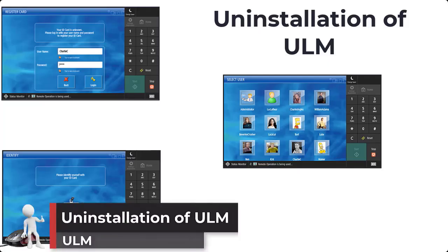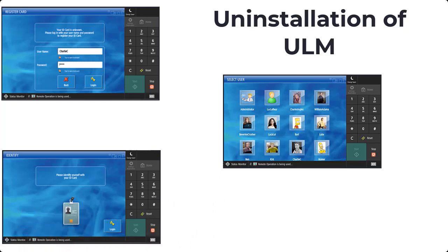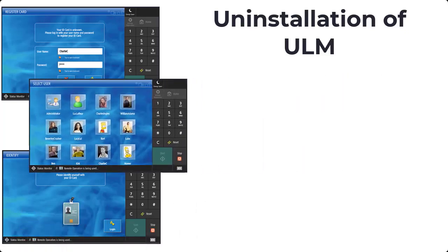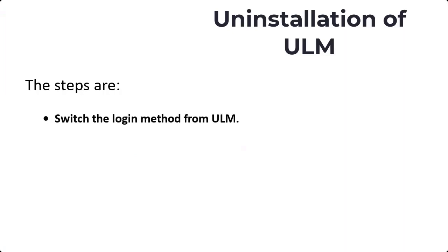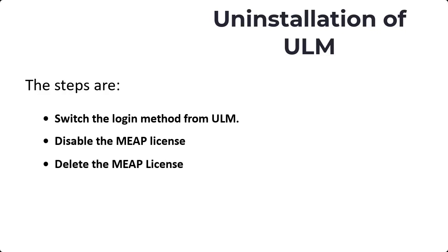If the customer does not want to continue to use ULM, or wants to remove ULM before returning the device at the end of a lease, the administrator can uninstall ULM. This will remove any installed MEEP applications as well as the database of user information on the device. The steps are: switch the login method from ULM, disable the MEEP license, delete the MEEP license, and uninstall the MEEP application.